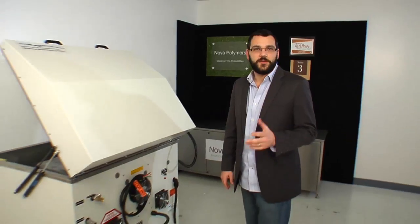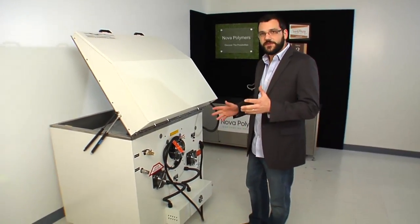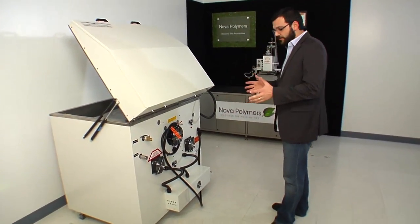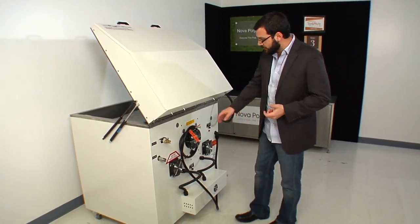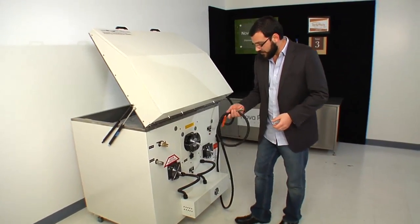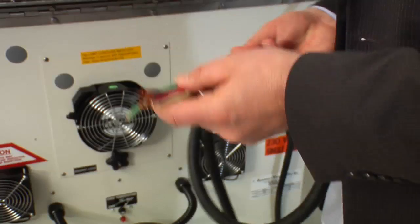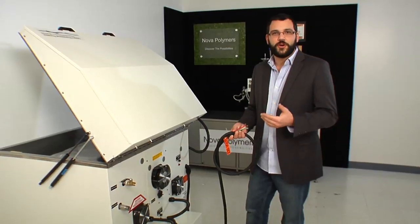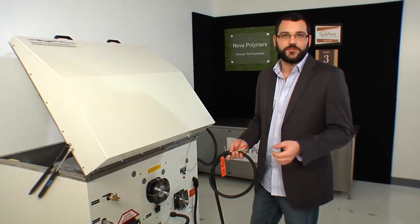So we've got the Orbital 10 unpackaged and uncrated and in position. I've got the machine turned around so we can go over a couple of things. To get started, we're going to run power to it. So we've got our power cord here and as you can see, there's no plug on the end of it. Typically, it gets hardwired in and you can consult your electrician about that.